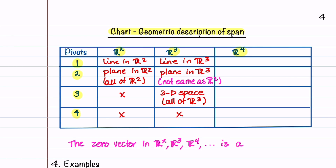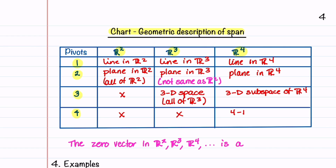In R4: one linearly independent vector gives a line in R4; two gives a plane in R4; three gives a 3D subspace of R4; and four gives 4D space, or all of R4. Also note that the zero vector in R2, R3, R4, or higher dimensions is always described as a point.